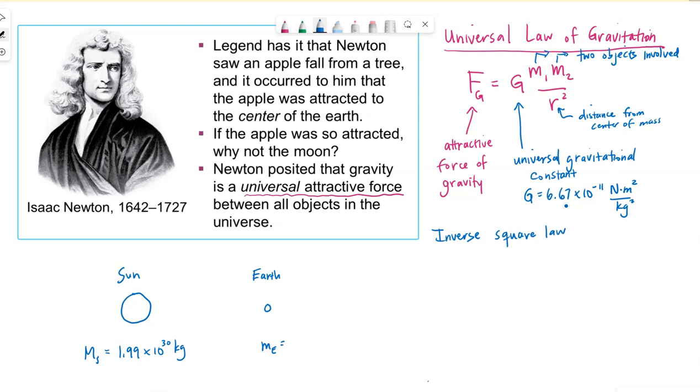Mass of the earth is listed as 5.98 times 10 to the 24th kilograms. The distance between them on average, the earth does not orbit the sun in a perfect circle, so the average distance between the sun and the earth is 1.5 times 10 to the 11th meters.